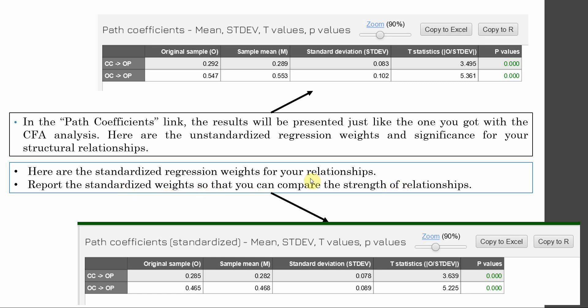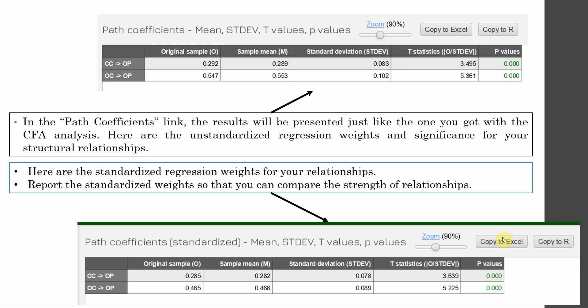In both cases the relationships are significant. Regarding R-square — the squared multiple correlation — 47.3% of the change in OP is being accounted for by OC and CC.